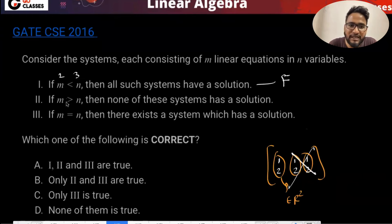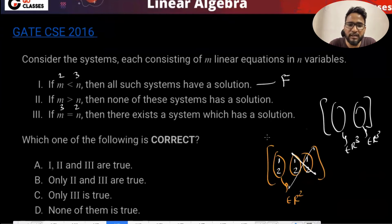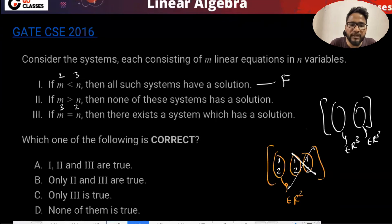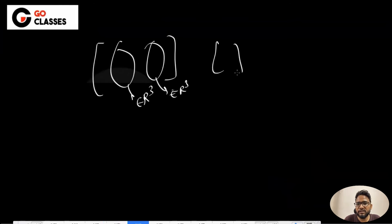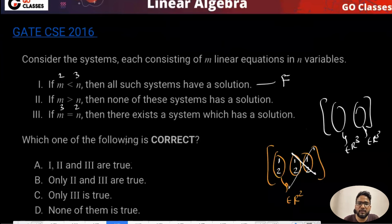If m is greater than n, suppose this is 3 rows and 2 columns - everything in R3, two columns in R3. They say none of the systems has a solution, but that's not right. It depends on B. If you are just copying one of the columns, you do have the solution. So none of the systems having a solution is not correct - some systems have solutions. This is also false.